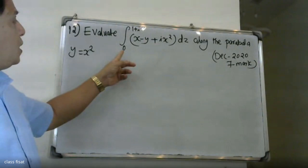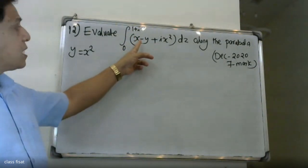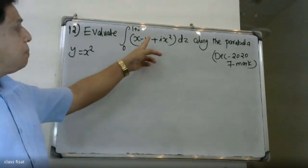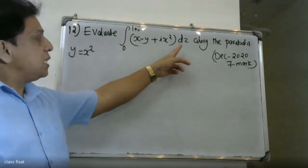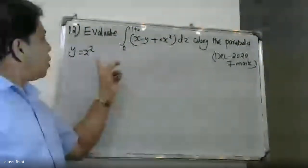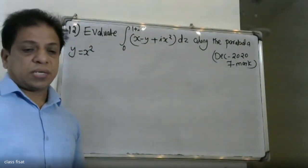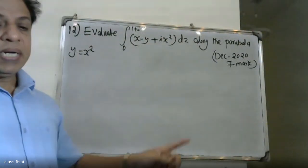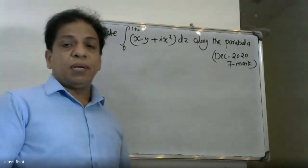We want to evaluate the integral from 0 to 1 of (x minus y plus ix²) dz along the parabola y equal to x square.